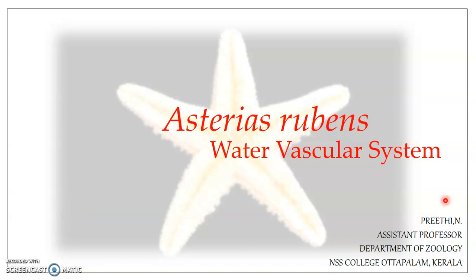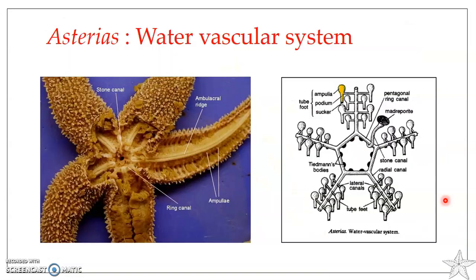Welcome back to the discussion on Asterias rubens. In this presentation we'll be looking into a very unique system found in Asterias rubens — the water vascular system. It helps mainly in locomotion, even though it is involved in many other functions. It is a system of canals through which sea water and amoeboid corpuscles move about — sea water enters into these canals and flows through them.